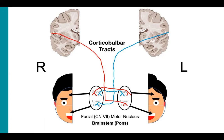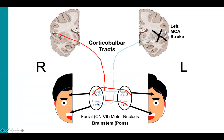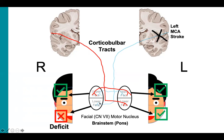So let's see what happens with a left MCA stroke. In a left MCA stroke, we lose the blue upper motor neurons from the left hemisphere, which leaves us only with the red fibers from the right hemisphere. These red fibers will innervate the right and left upper face and the contralateral left lower face. However, the sole innervation to the right lower face from the left hemisphere has been lost. Therefore, the deficit from a left MCA stroke will be localized to the right lower face.